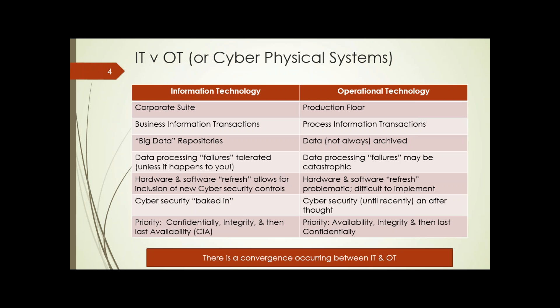IT versus OT — terminology you'll hear in this space. Information technology: the PC you use in your office is a piece of IT. That microprocessor-based controller on the manufacturing floor is typically called operational technology, or OT — sometimes called cyber-physical systems, the Internet of Things, or in DOD terminology, platform IT. IT is typically defined in the corporate suite; operational technology is typically on the production floor.